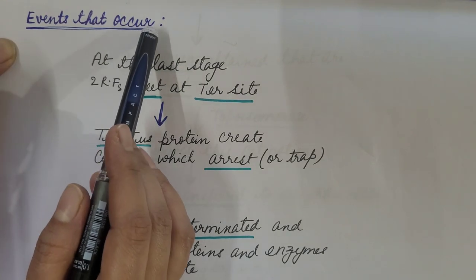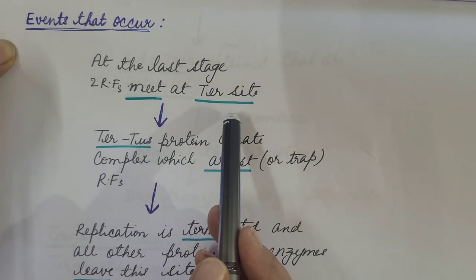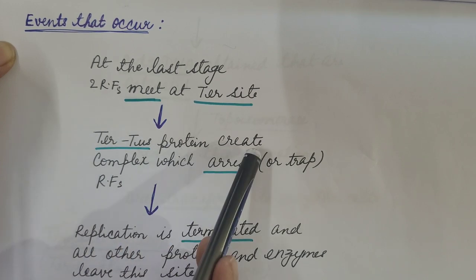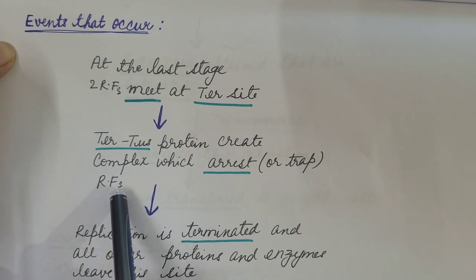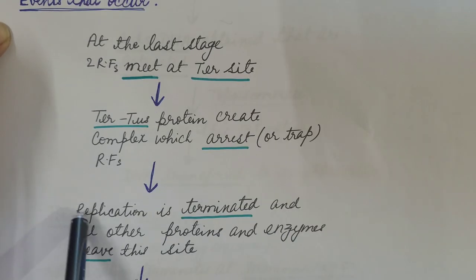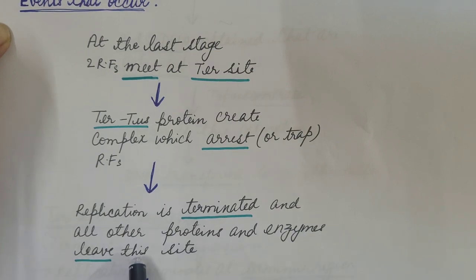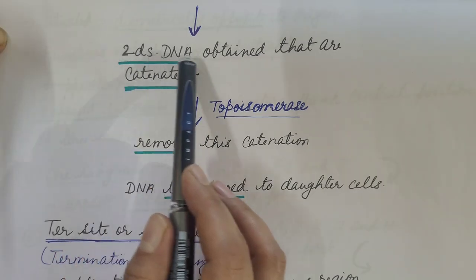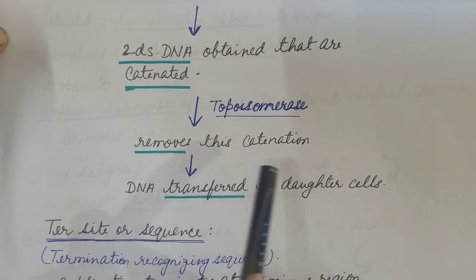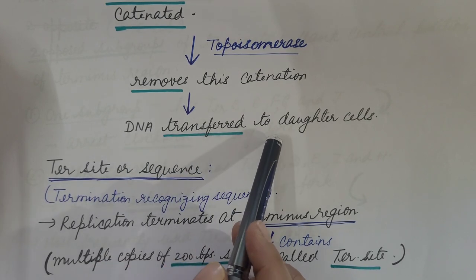Now, what are the events that occur during termination? At the last stage, two replication forks meet at a TER site. This TER site is present in the terminus region. TER is the binding site for TUS protein. The TER-TUS protein complex arrests replication forks — they do not allow the replication fork to proceed and thus act as a replication fork trap. The replication is terminated and all other proteins and enzymes involved in replication leave this site. After termination, two double-stranded DNAs are obtained that are catenated or knotted to each other. Then the topoisomerase enzyme removes this catenation and one double-stranded DNA is transferred to each daughter cell.